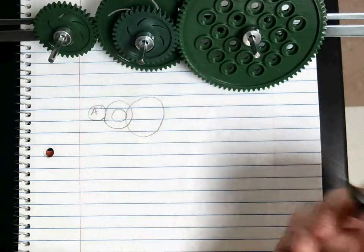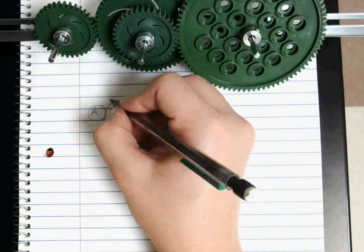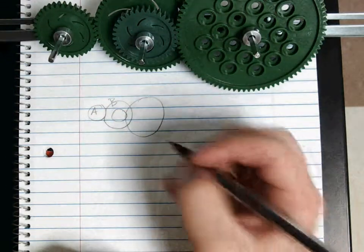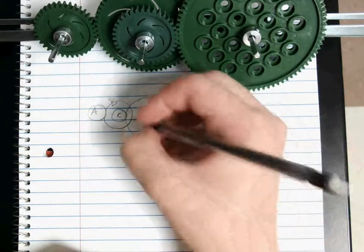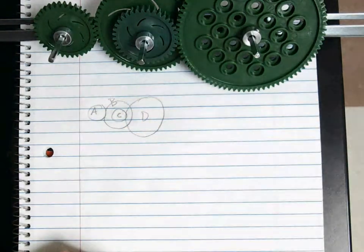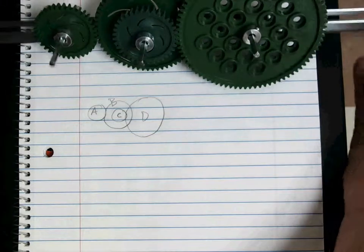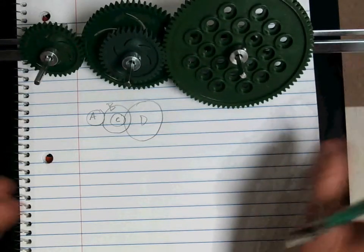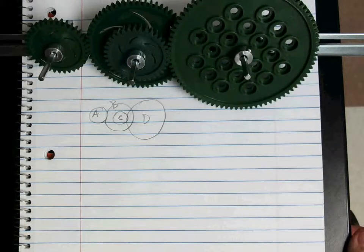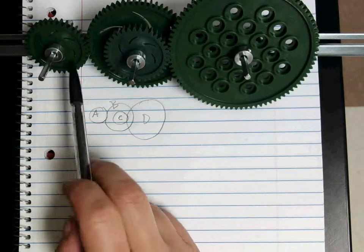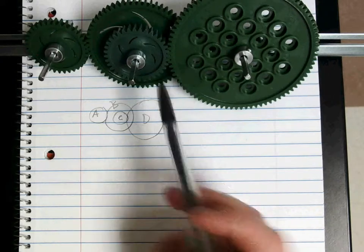So this first one is going to be A. Our larger one that it's connected to is B. Our little one in the middle is going to be C. The largest one that that's connected to is D. Of course, yours is probably not going to look exactly the same as this one, and that's perfectly fine. Just make sure you're using your numbers for your gears whenever you're doing those.